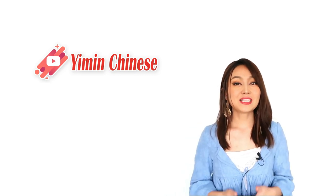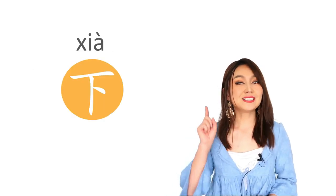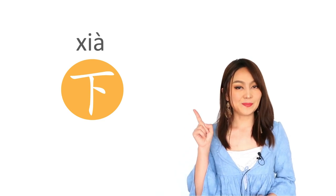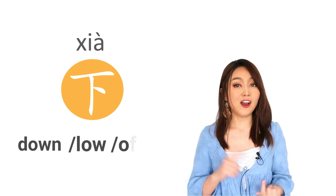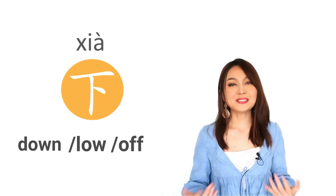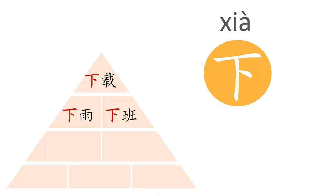你好, I'm a teacher. Today we are going to learn Chinese fast with this character 下. It means down, low, or off — something like this. It's one of the most fundamental characters in Chinese, so it forms lots of commonly used words in everyday life. So that's what we are going to see today with practical example sentences. 好, 我们上课!